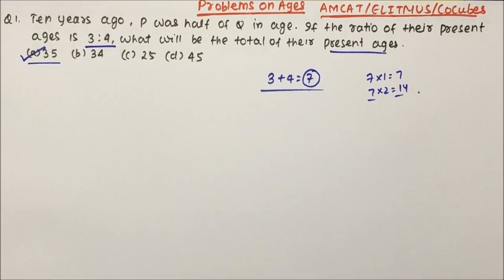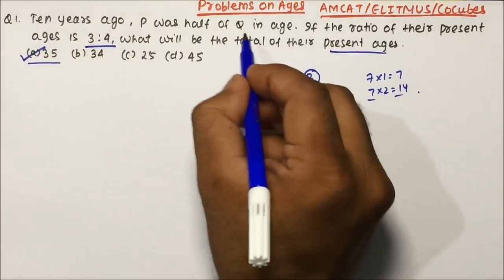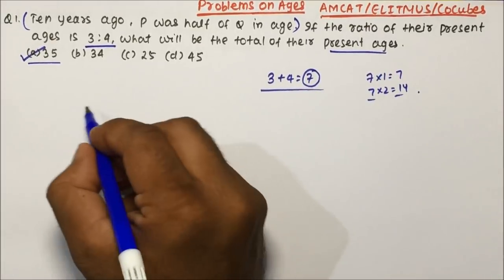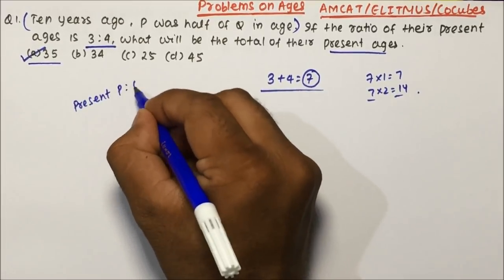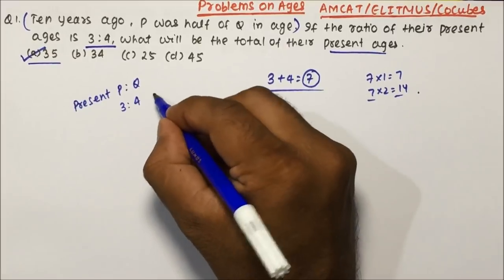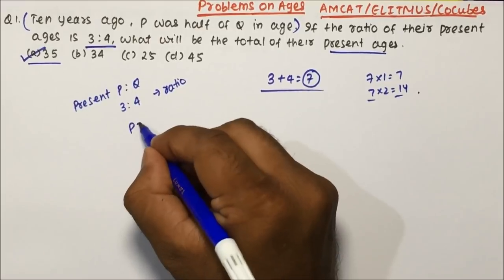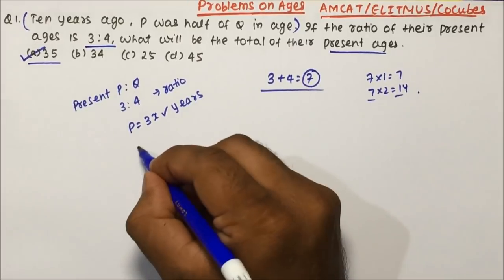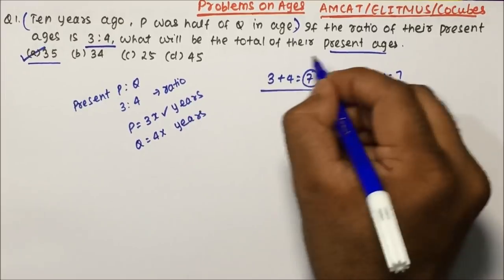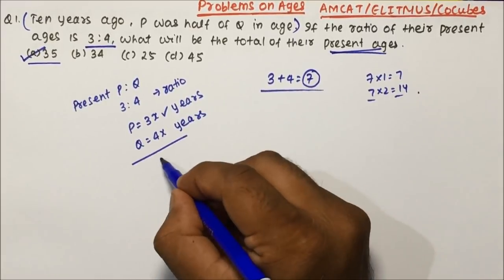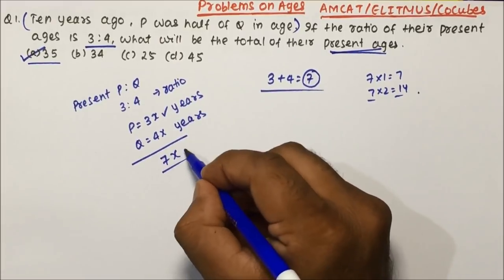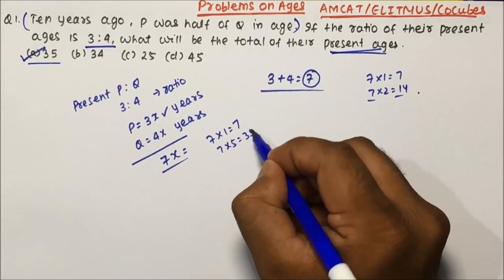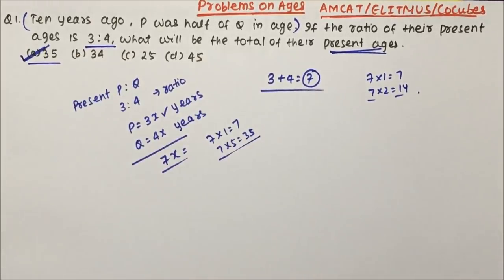Now let us understand the concept used here. The statement '10 years ago P was half of Q' I am not interested in. The ratio of their present age of P and Q is 3 is to 4. If any data is given in terms of ratio and you want to write in terms of value, then P's age will become 3x and Q's age will be 4x. The total of their present age will become 7x, meaning whatever option you get should be a multiple of 7. So option A is the correct answer.